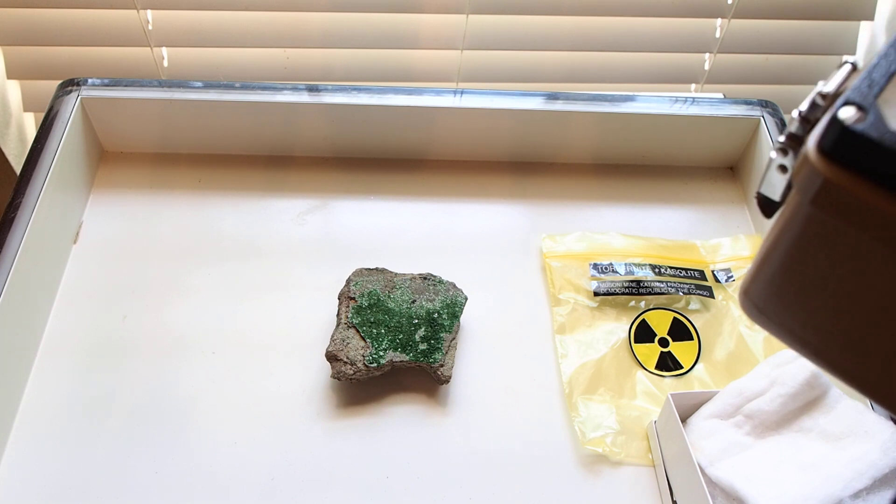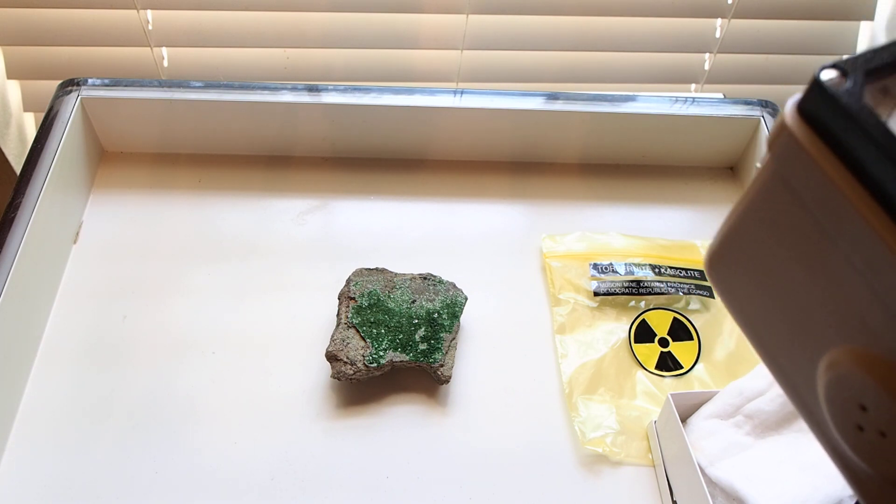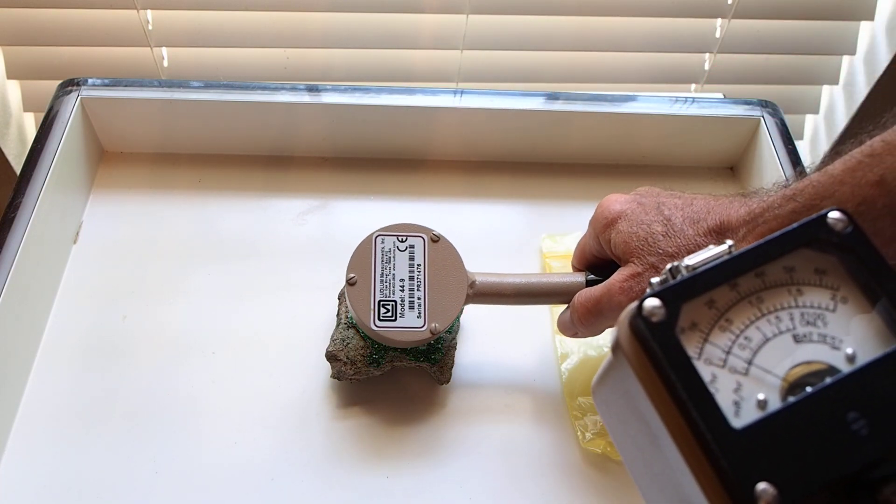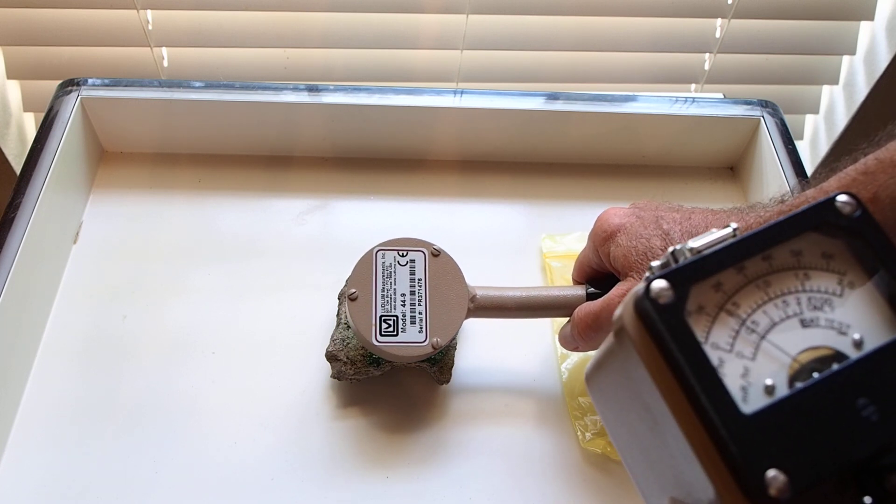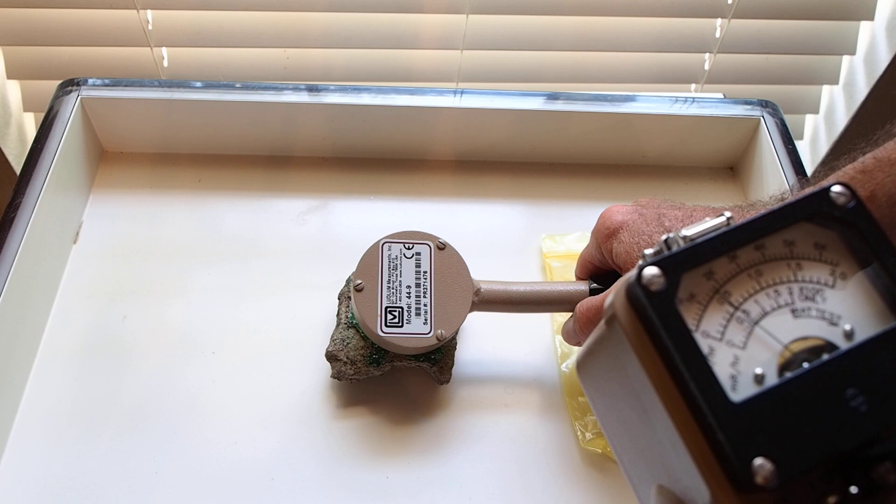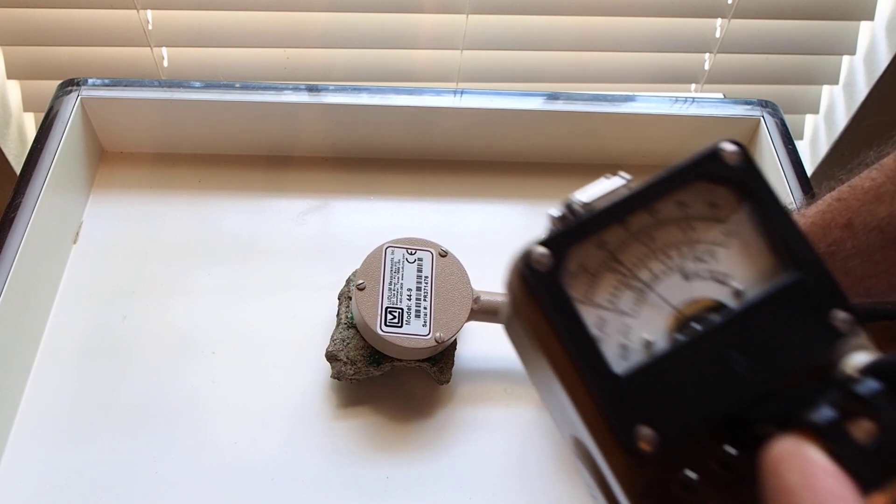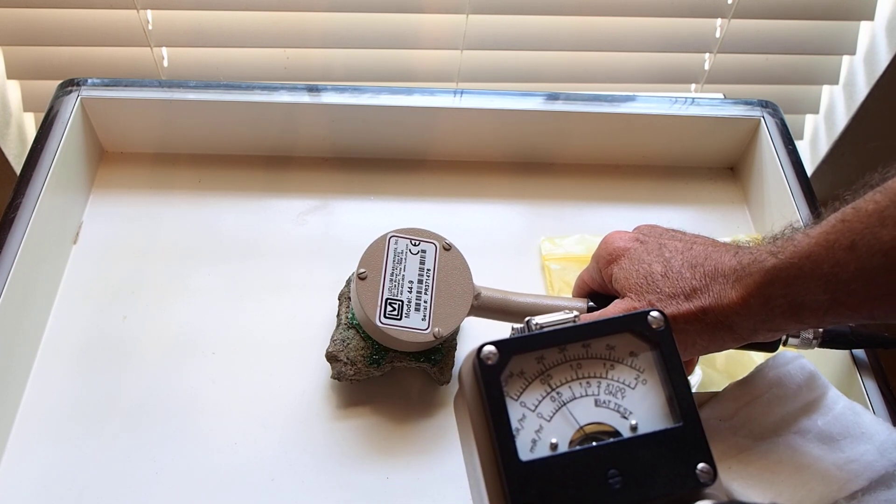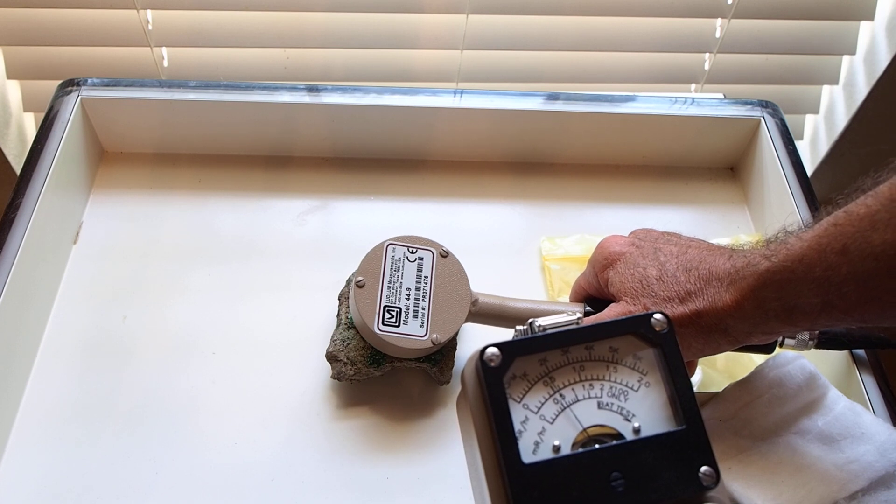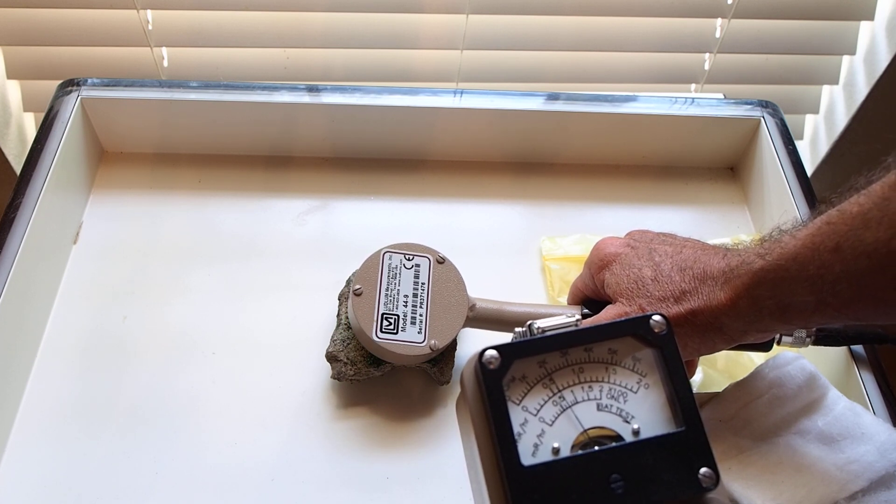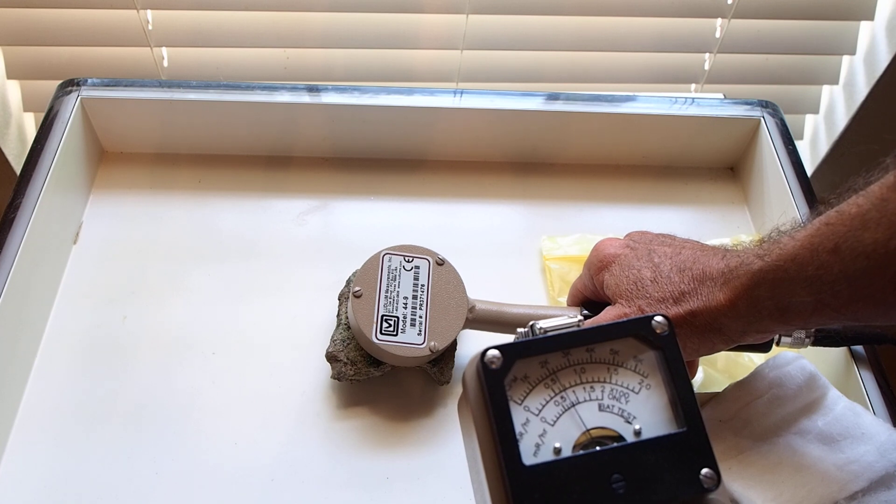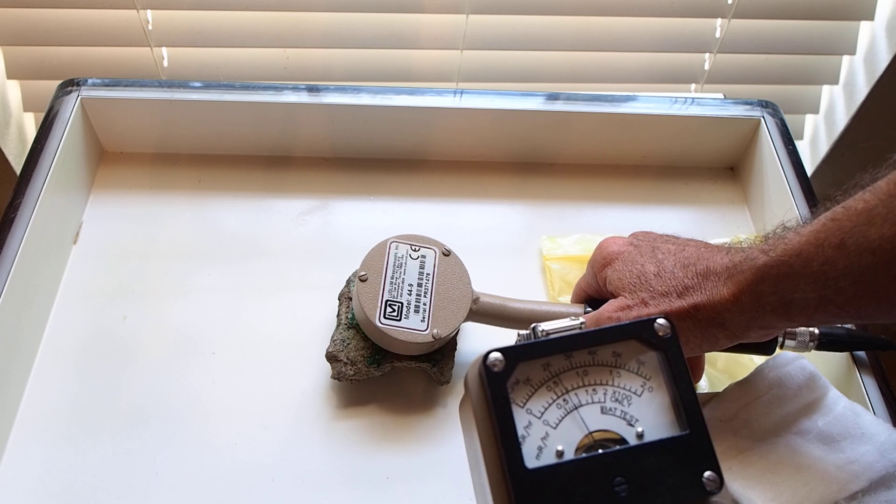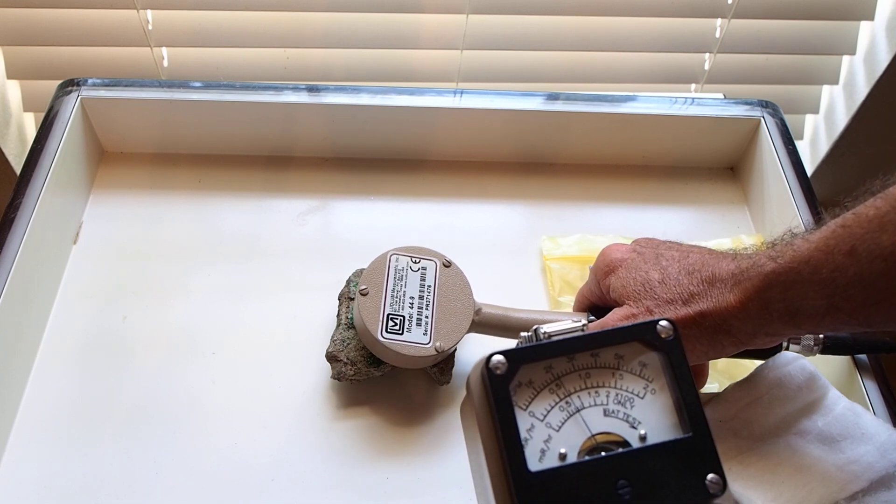So we're going to change to the times 100 setting. We're using our model 44.9 pancake. At a distance of about an inch from the specimen, we're getting a reading of approximately 220,000 counts per minute. Very high rating.